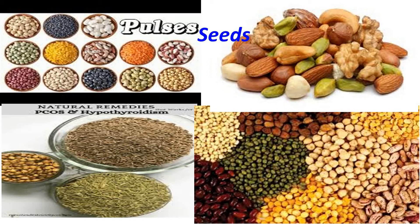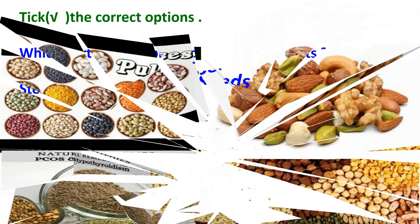There are some seeds in the form of spices also. Without spices, vegetables don't taste good. Some seeds in the form of spices are cumin seeds, fennel seeds, coriander seeds, etc. So students, today we have learned about root system, shoot system, and different parts of plants, as well as what functions they perform. Now let us see what we have learned through MCQs.